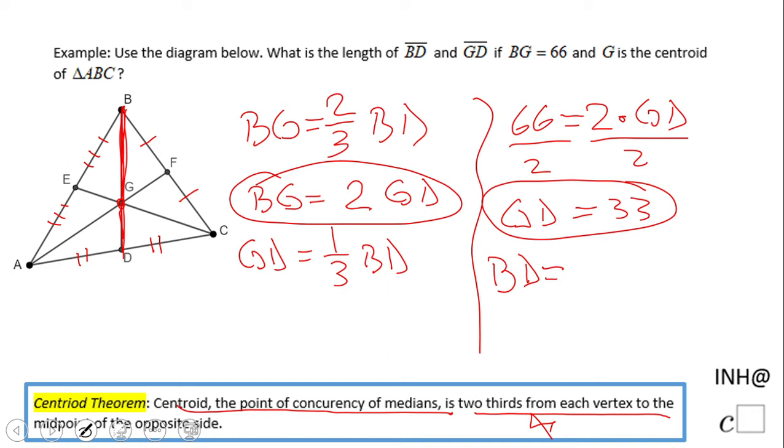BD is the sum of BG and GD using the segment addition postulate. That means BD equals 66 plus 33, so BD will be 99.